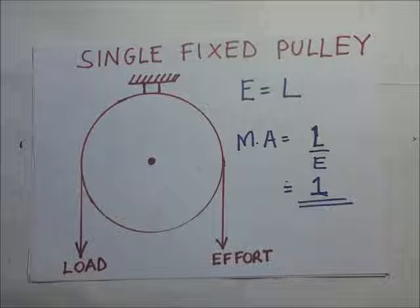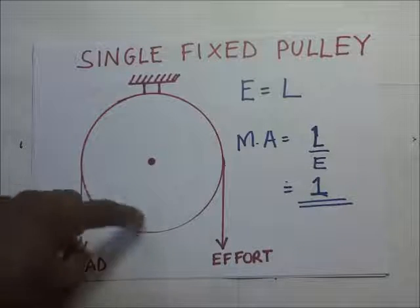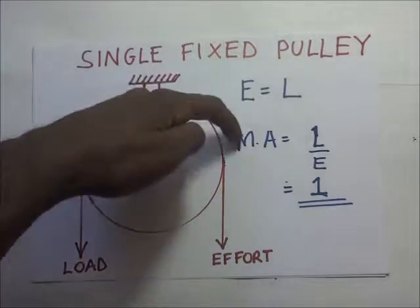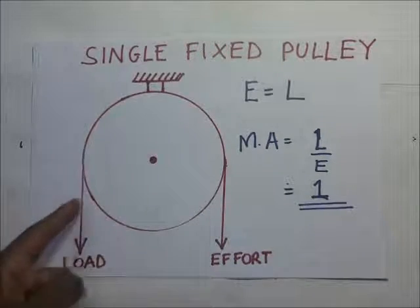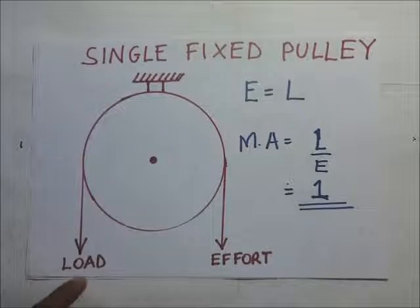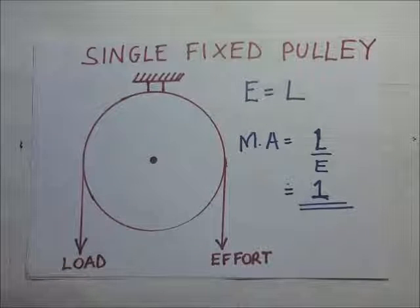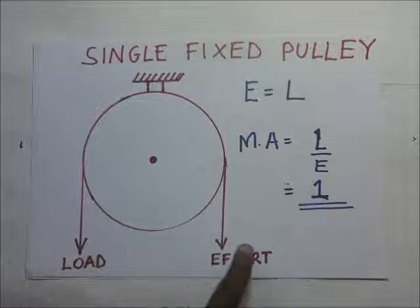Let's look at the fixed pulley first. If you look at this pulley it is the wheel, it is grooved and in the groove this rope is passing through that groove. And at one end of the rope we shall fix our load and the other point we shall fix our effort.